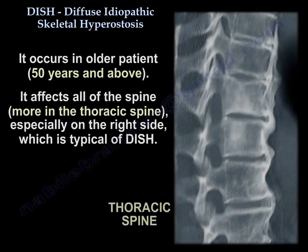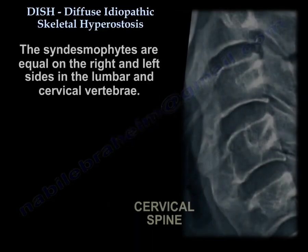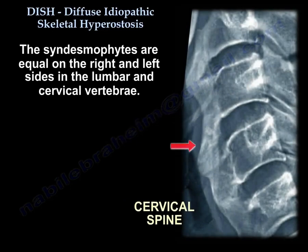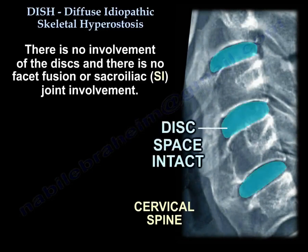DISH occurs in older patients, 50 years and above. It affects all of the spine, but more so in the thoracic spine, especially on the right side — which is typical of DISH. The syndesmophytes are equal on the right and left side in the lumbar and cervical vertebrae. There is no involvement of the discs, and there is no facet fusion or sacroiliac joint involvement.